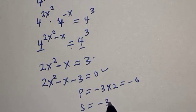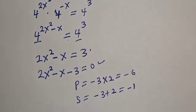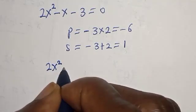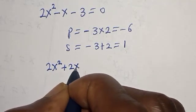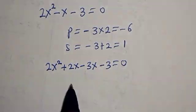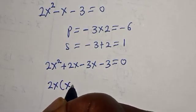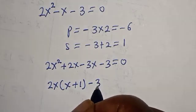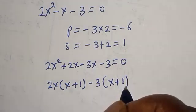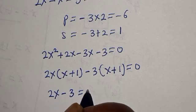Now let's substitute. We have 2s squared plus 2s minus 3s minus 3 is equal to 0. Then 2s is common here: we have 2s bracket s plus 1, minus 3 bracket s plus 1, is equal to 0.